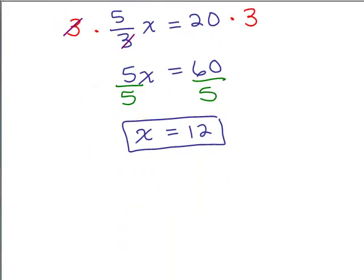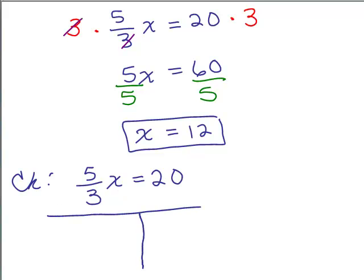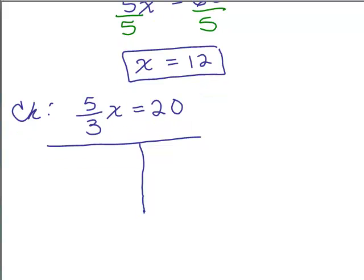Now we can check our work by writing the original equation, which was 5 thirds x equals 20, and we're going to plug in the value for x, which in this case was 12. So we have 5 thirds times 12, which I'm going to write as 12 over 1, and we just simplify that side.